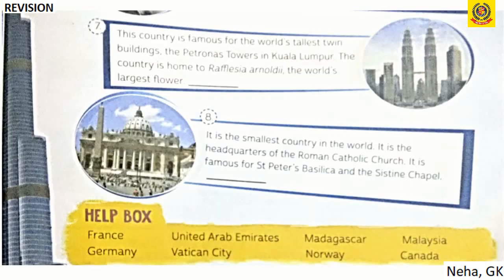Seventh, a country famous for the world's tallest twin buildings — the Petronas Tower in Kuala Lumpur — and home to Rafflesia arnoldii, the world's largest flower — the answer is Malaysia.